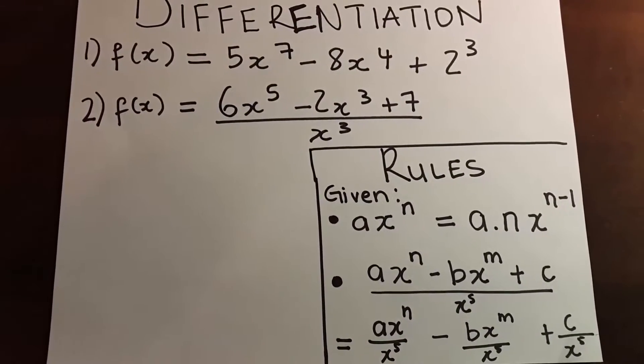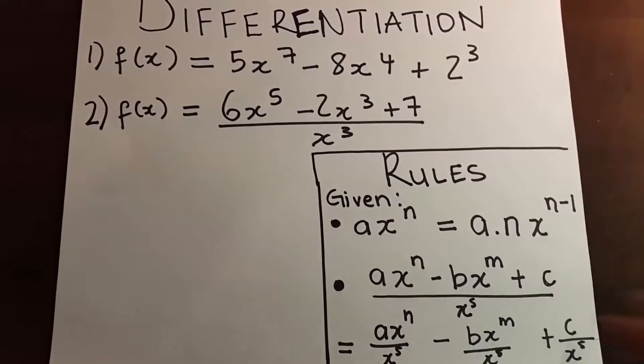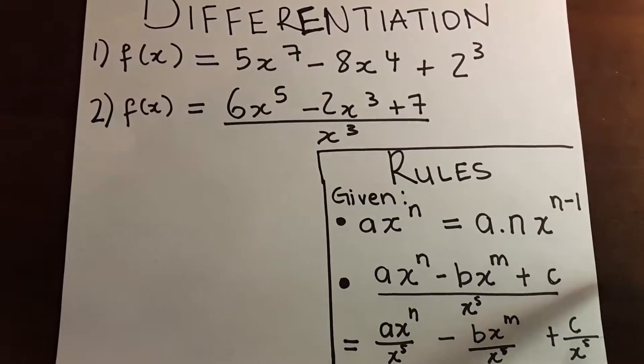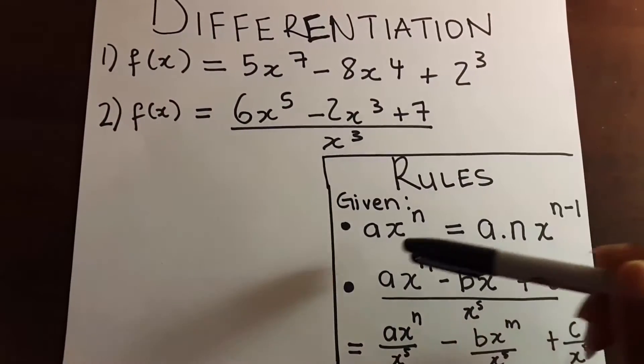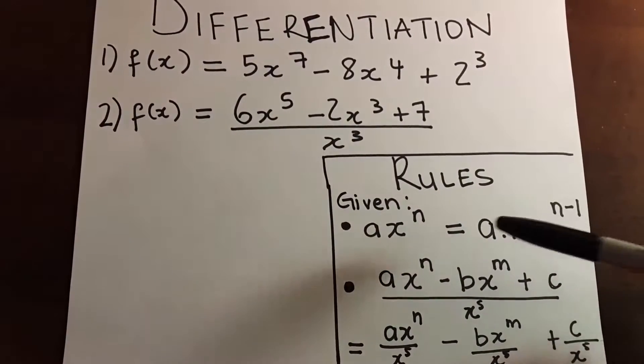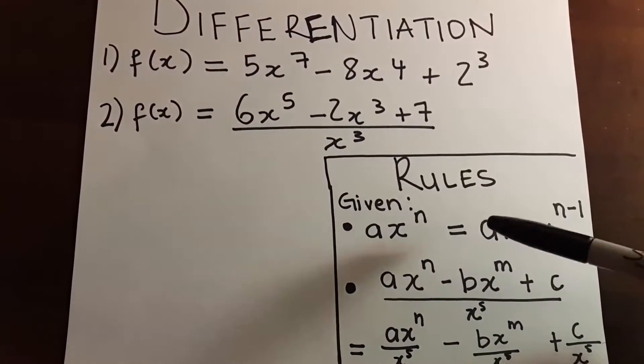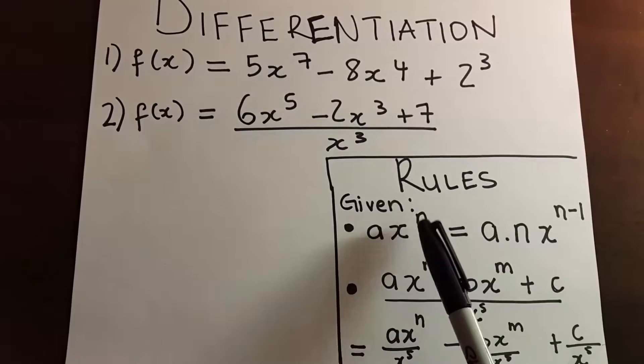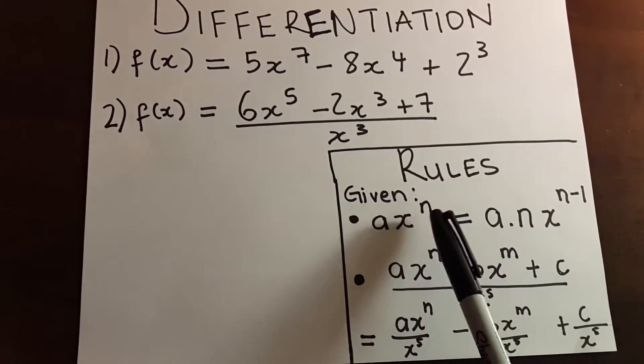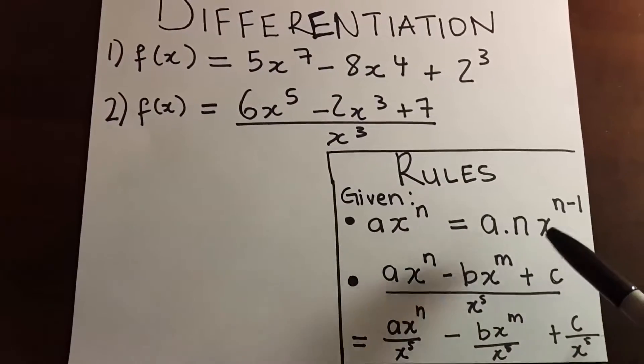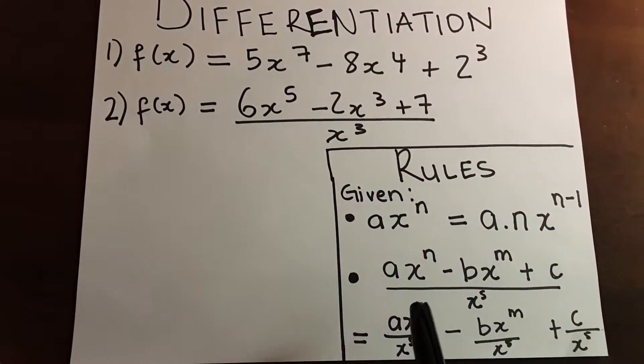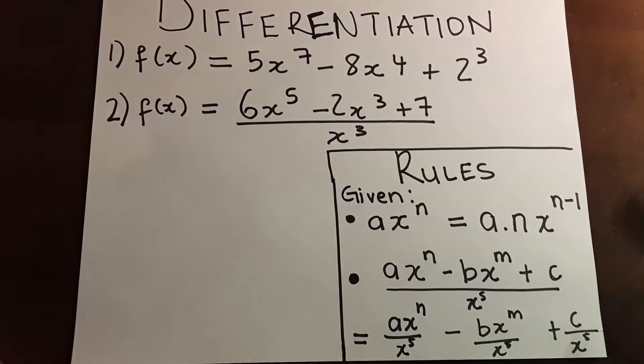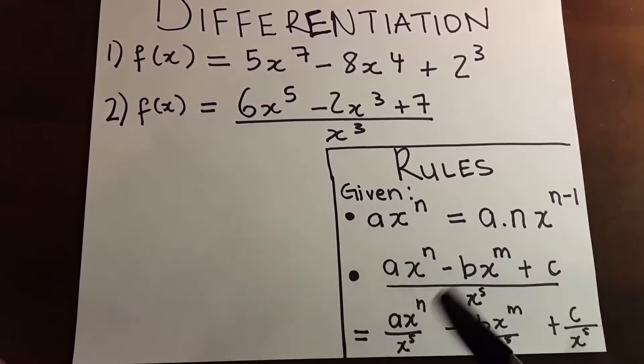In this video we're going to be learning about differentiation. The rules are here: given ax^n, you say it equals a multiplied by the exponent n, and then you write x^(n-1). If you're given a fraction like this one, here are the rules you're going to apply.